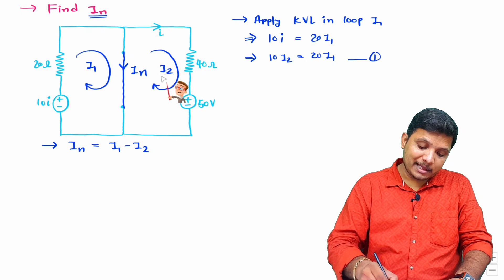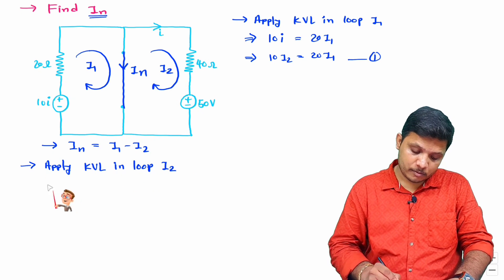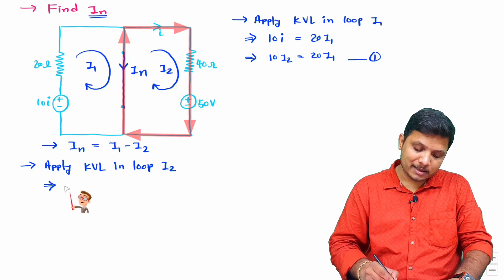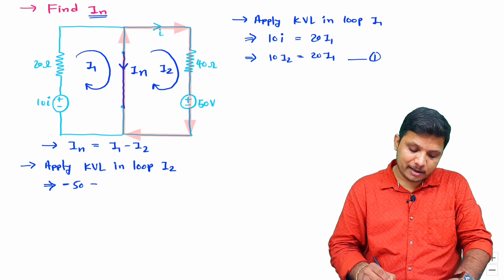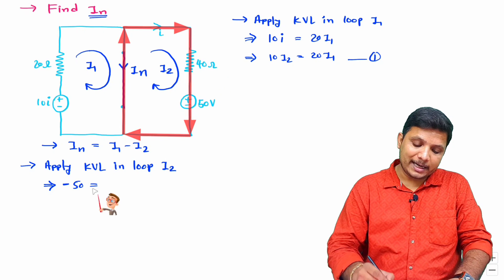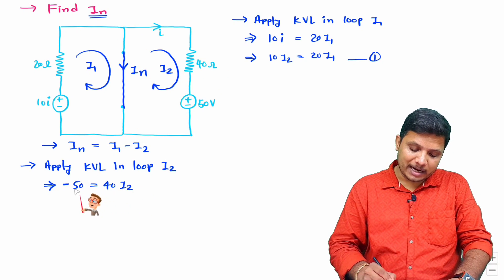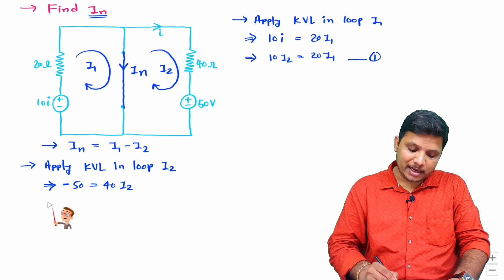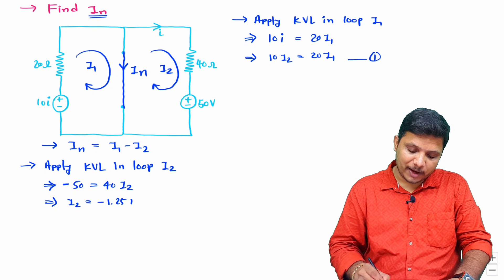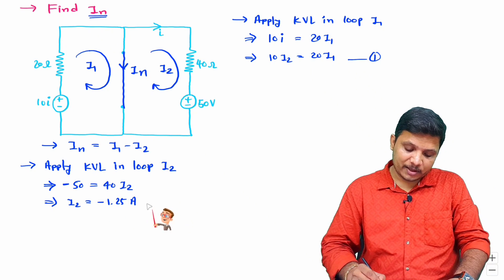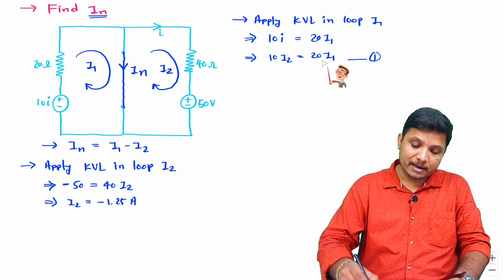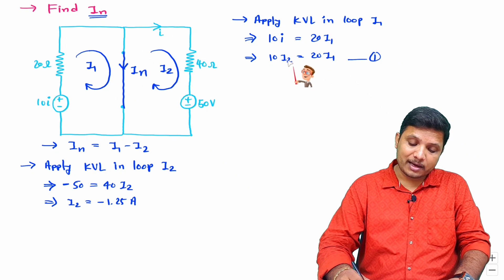Applying KVL in loop two: the voltage source goes from plus to minus, so that is minus 50, which equals the voltage drop across 40 Ω, giving 40 times I_2. Therefore I_2 equals minus 50 divided by 40, which is minus 1.25 amperes. From equation one, I_1 is half of I_2.